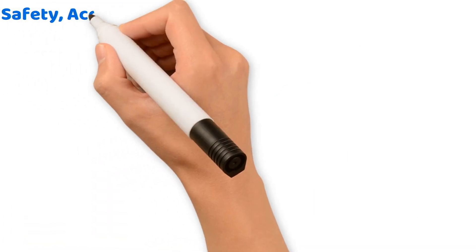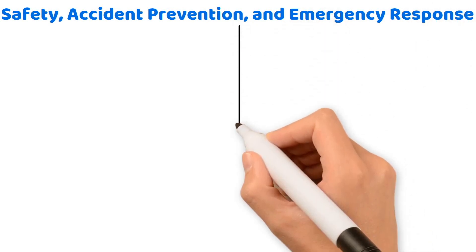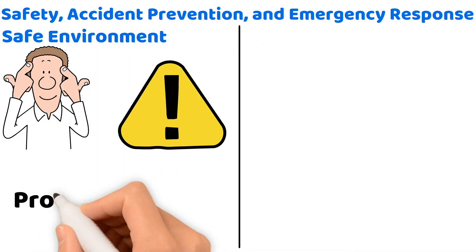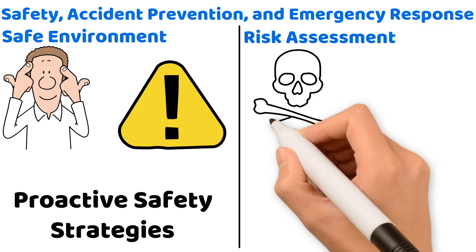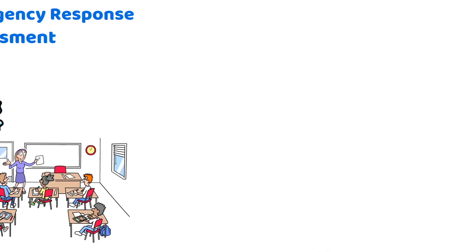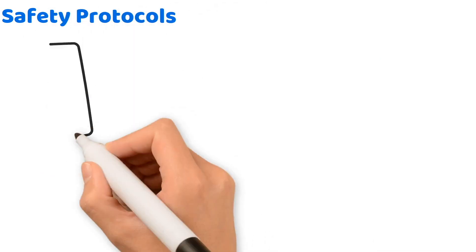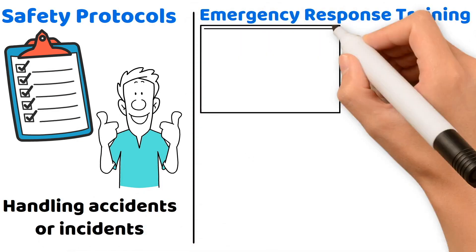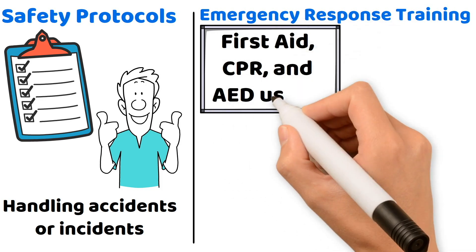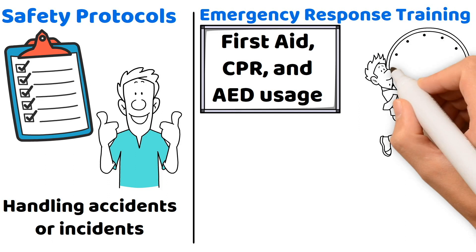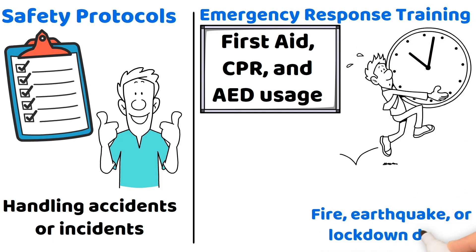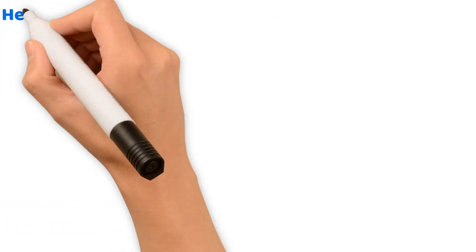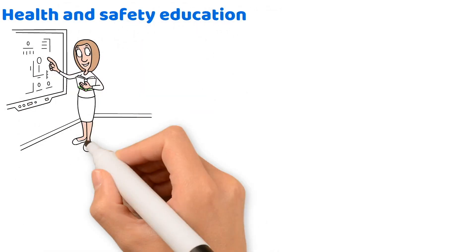Let's now transition to safety, accident prevention, and emergency response. Creating a safe environment involves a thorough understanding of potential hazards and implementing proactive safety strategies. First, risk assessment involves identifying potential hazards in your classroom or school environment. Second, safety protocols should be established and enforced, including clear procedures for handling accidents or incidents. Third, emergency response training — such as certification in first aid, CPR, and AED usage — is essential for teachers. Conducting regular emergency drills like fire, earthquake, or lockdown drills can prepare both you and your students for unexpected situations. Incorporating health and safety education into your teaching practice helps build a culture of safety and preparedness.